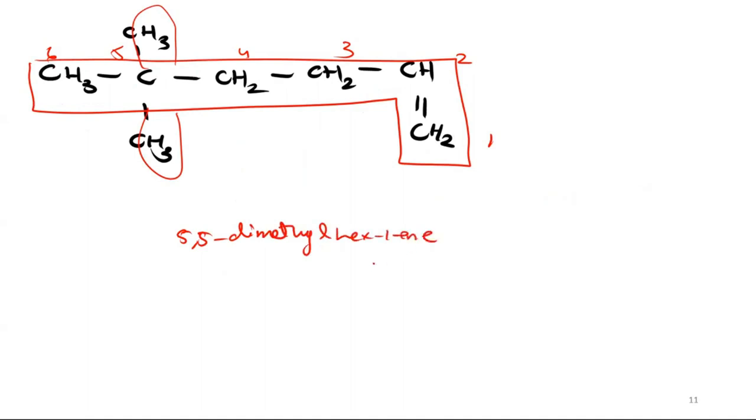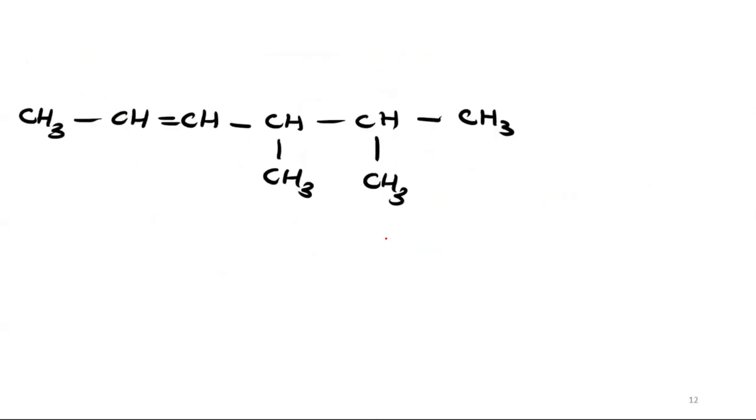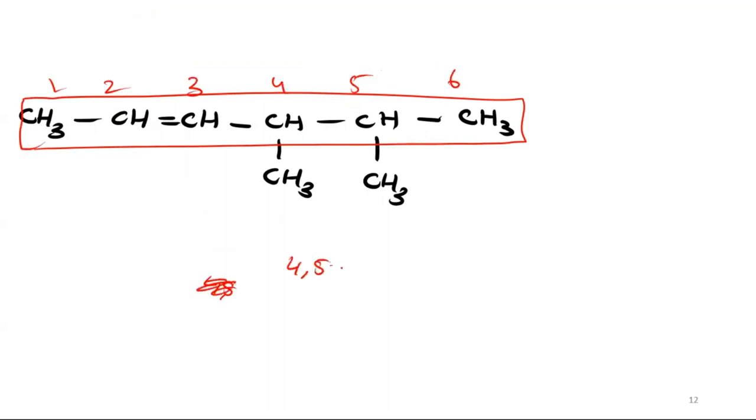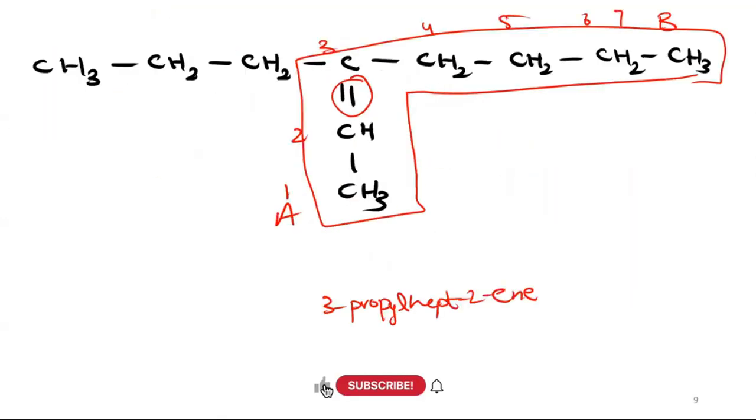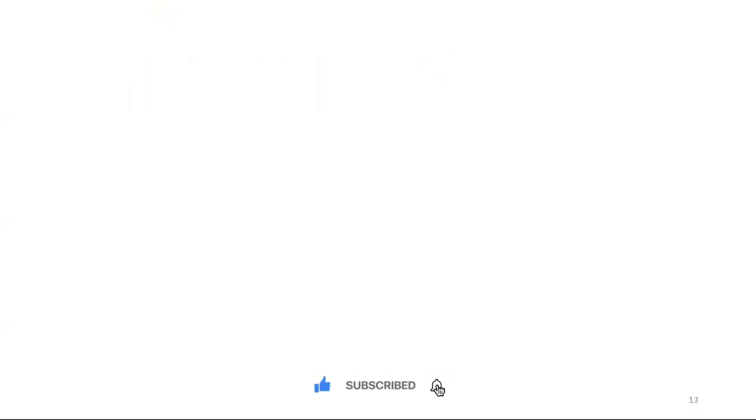Okay, last example. The longest carbon chain, obviously this is 1, 2, 3, 4, 5, 6. This becomes 4,5-dimethyl-hex-2-ene.